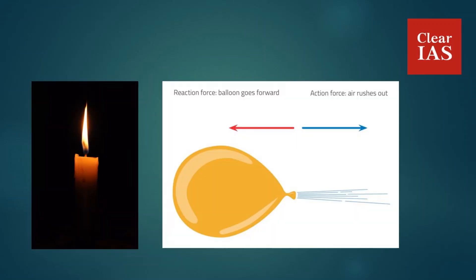On the screen you can see two things: one is a candle and the other is a balloon. Whenever a candle is burning, you know that for anything to burn you require two things — one is fuel and the other is oxygen. In this example of the candle, the fuel is wax and the oxygen from the atmosphere acts as the oxidizer.